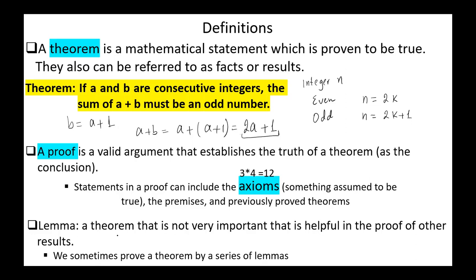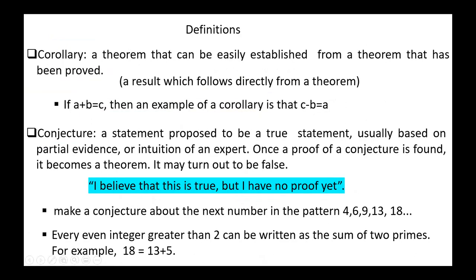Lemma: a theorem that is not very important but is helpful in the proof of other results. We sometimes prove a theorem by a series of lemmas. Corollary: a theorem that can be established from a theorem that has been proved — a result which falls directly from a theorem.